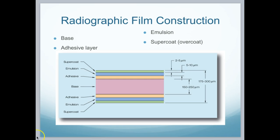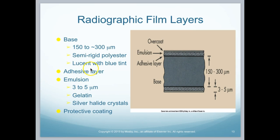Let's go over the components of a radiographic film, polyester radiographic film. Starting with the base layer, right in the center, it's connected to an adhesive layer that keeps the emulsion intact, and then we have a supercoat to help the durability. The base layer is 150 to 300 micrometers. It's made of semi-rigid polyester and is tinted with a blue tint. This blue tint helps to reduce the fatigue on the radiologist's eyes.